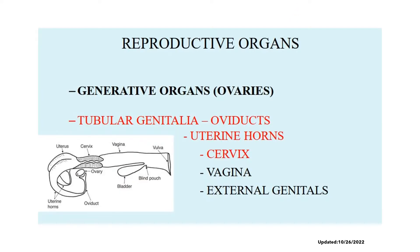The female reproductive tract consists of two major parts: the generative organs and the tubular genitalia. The generative organs refer to the ovaries, which are considered the female gonads. The tubular genitalia includes the oviduct, the uterine horns, the cervix, the vagina, and the external genitalia.